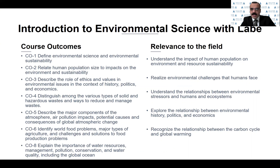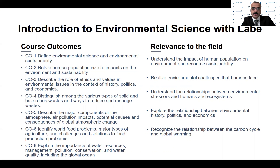The course outcomes are listed here. I would like to emphasize that this course will explain different components of environment and what environmental sustainability means. Through this course you will be able to describe different types of waste, air pollution impacts, and potential causes and consequences of global atmospheric change. You will also be able to explain world food problems, water resources, and water pollution and management. Through this course we would like to understand the impacts of human population on environment and resource sustainability.